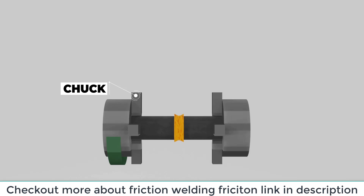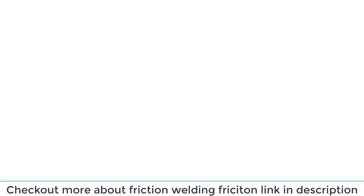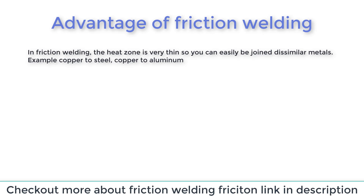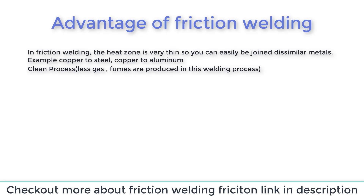Advantages of friction welding: The heat zone is very thin, so dissimilar metals can easily be joined — for example, copper to steel or copper to aluminum. It is a clean process; less gas and fumes are produced in this welding process.